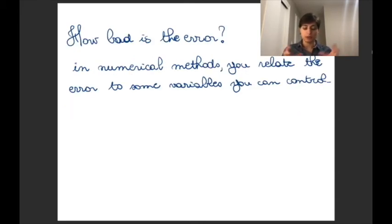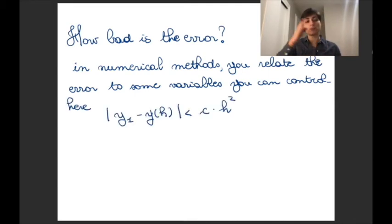How bad is the error? Usually when you're talking about numerical methods, you want to be able to have an idea of how much the error is based on some variables you can control. So in this case, we have some variables we are not able to control. How big or how difficult f is, it's not something we can control, it's just given to us. What we can control is the step size. So what is the error that we're making?